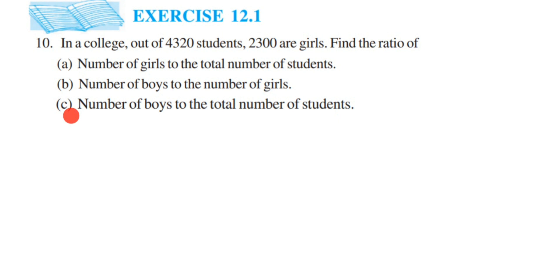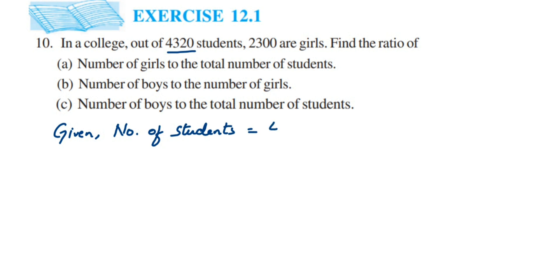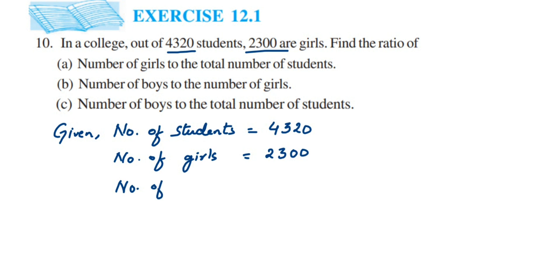Before we start finding the ratios, let's note down what we know from the question. The total number of students in the college is 4320. Out of these students, the number of girls is 2300.